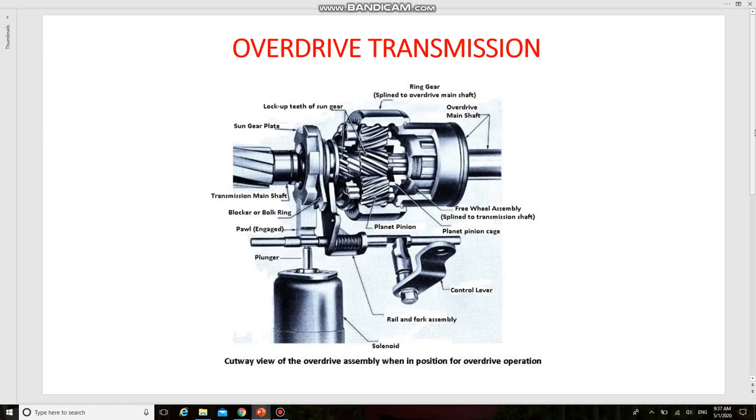Let us see the construction of overdrive mechanism. It consists of a set of planetary gears, a solenoid and pole arrangement for locking the sun gear, and a rail and fork assembly linked to the dash control knob for disconnecting the overdrive when not in use.